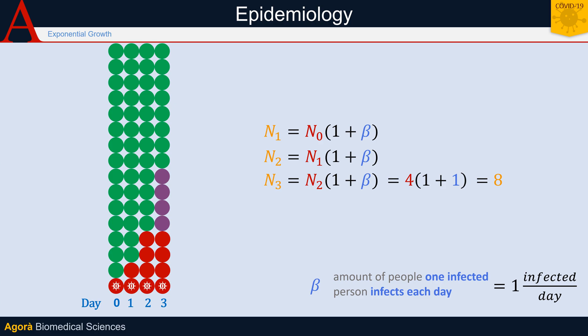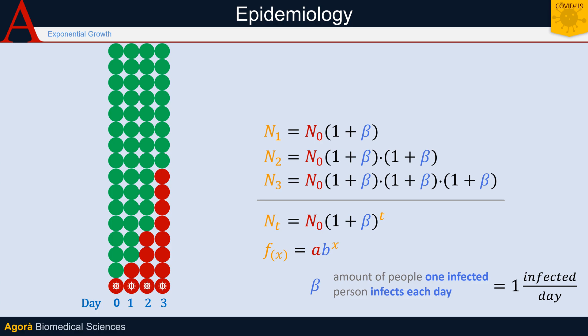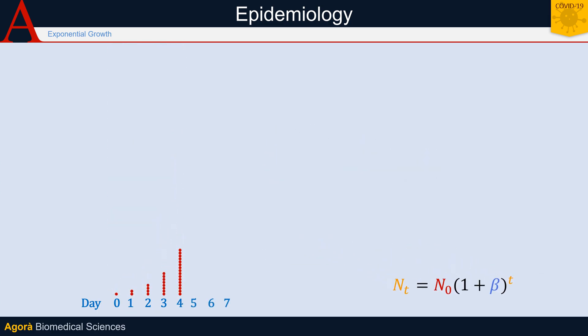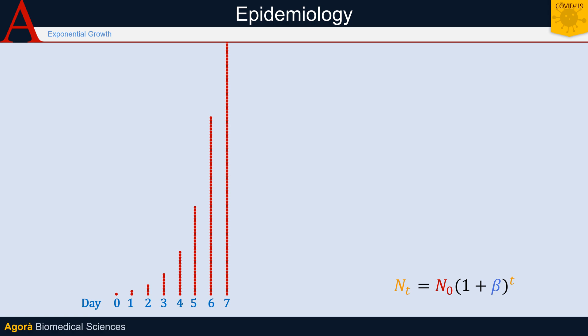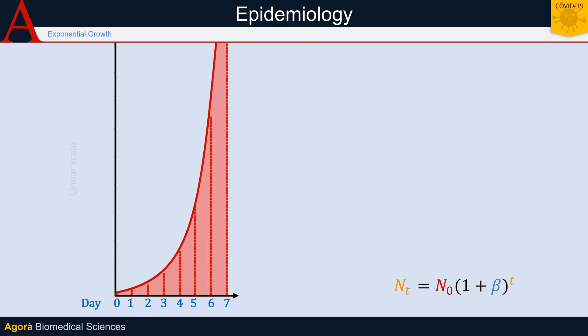If we try to rewrite the formulas to refer to day zero and not to the previous day, it is easy to generalize the equation and get the number of infected people on any day. You should be quite familiar with this type of equation, since it's an exponential equation. This means that as the days go on, the number of infected people grows faster and faster, and after only seven days, the number of infected people no longer fits on the screen.